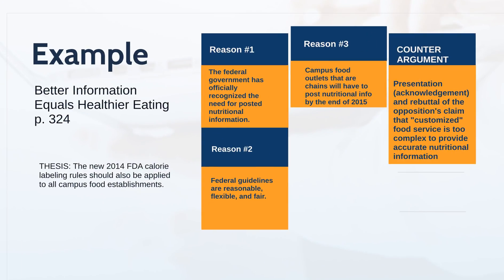In your textbook you read 'Better Information Equals Healthier Eating,' on page 324. It's a sample student essay — not a perfect essay, but it lays out nicely the structure of what an argument essay should look like. The thesis is that the new 2014 FDA calorie labeling rules should also be applied to all campus food establishments. They've taken this idea of nutrition labeling and argued it should apply to campus food establishments, which at the time, or depending on the state, might not have had that requirement.